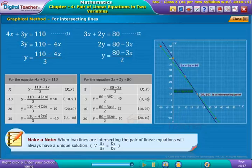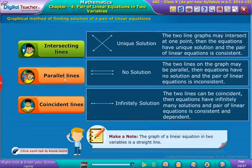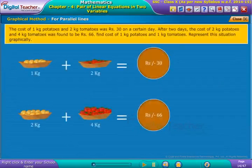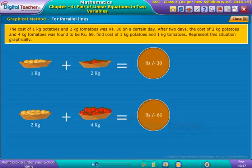Now, let us solve another problem on graphical method for parallel lines. Example: The cost of 1 kg potatoes and 2 kg tomatoes was Rs. 30 on a certain date. After 2 days, the cost of 2 kg potatoes and 4 kg tomatoes was found to be Rs. 66.